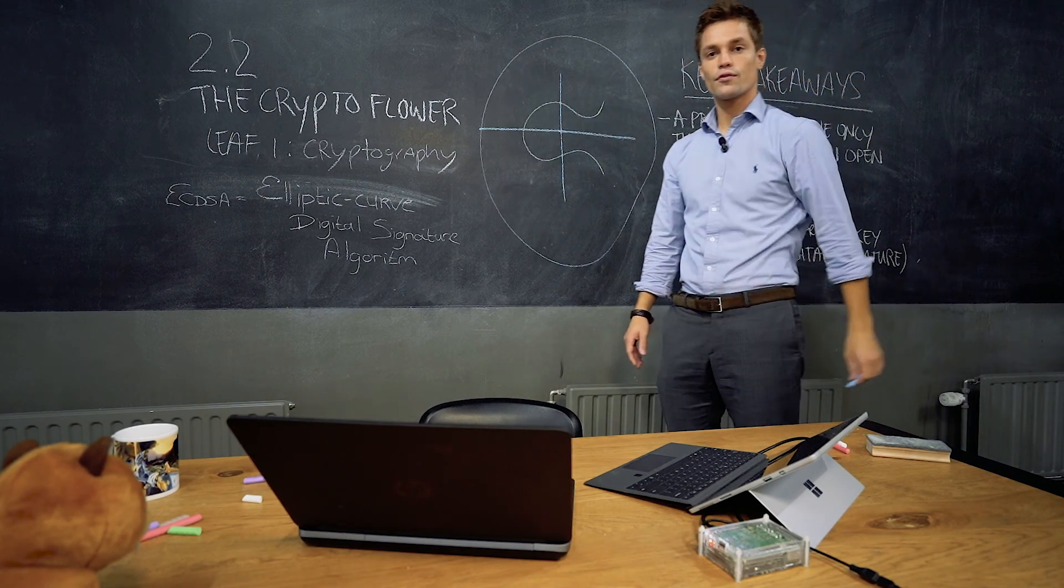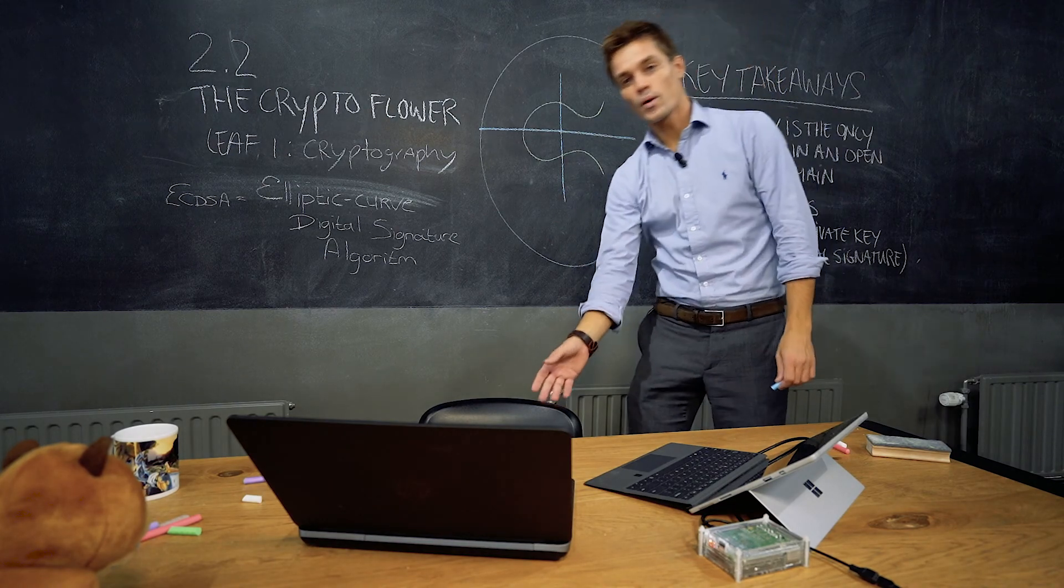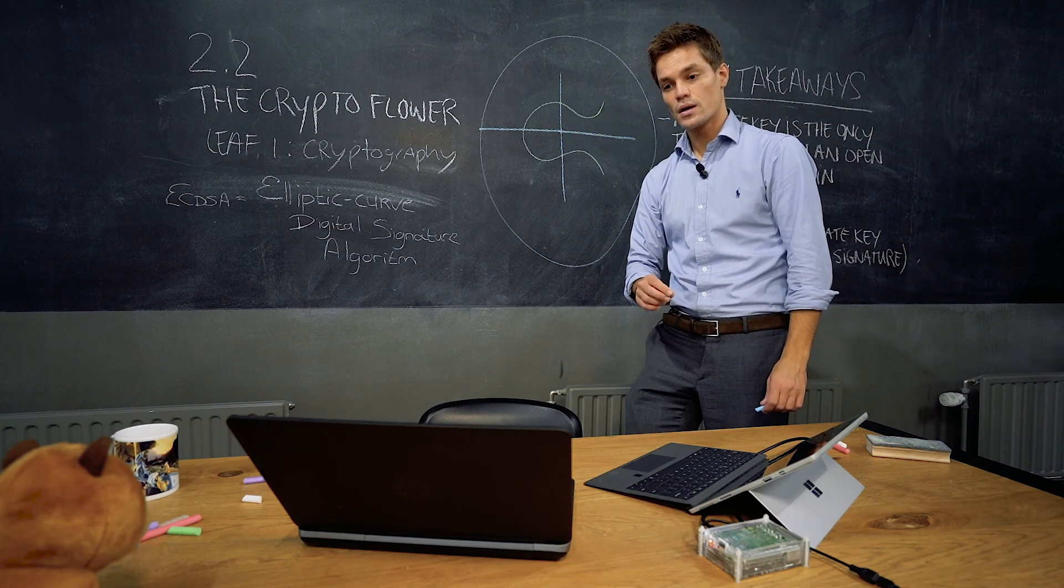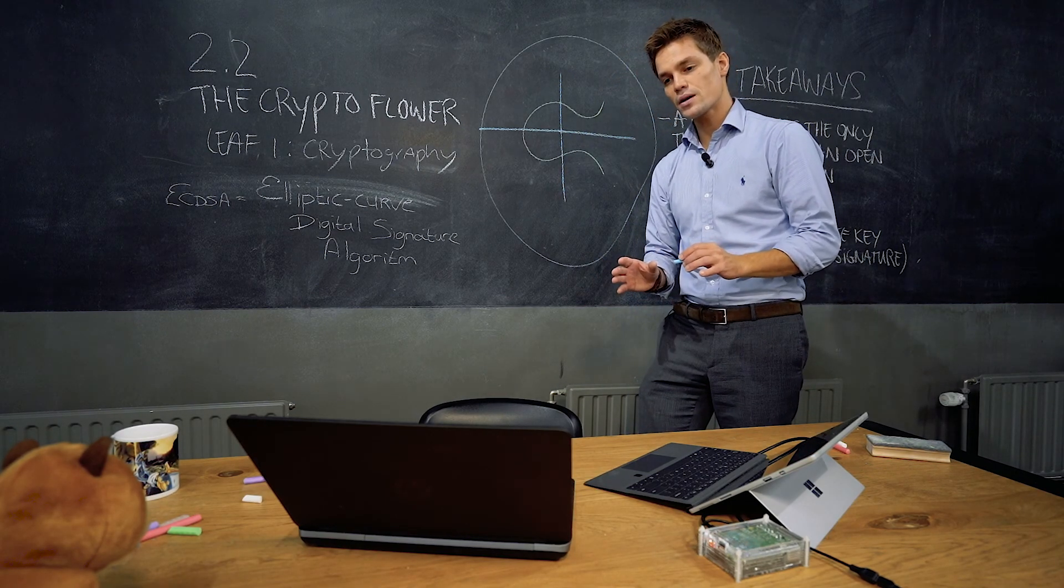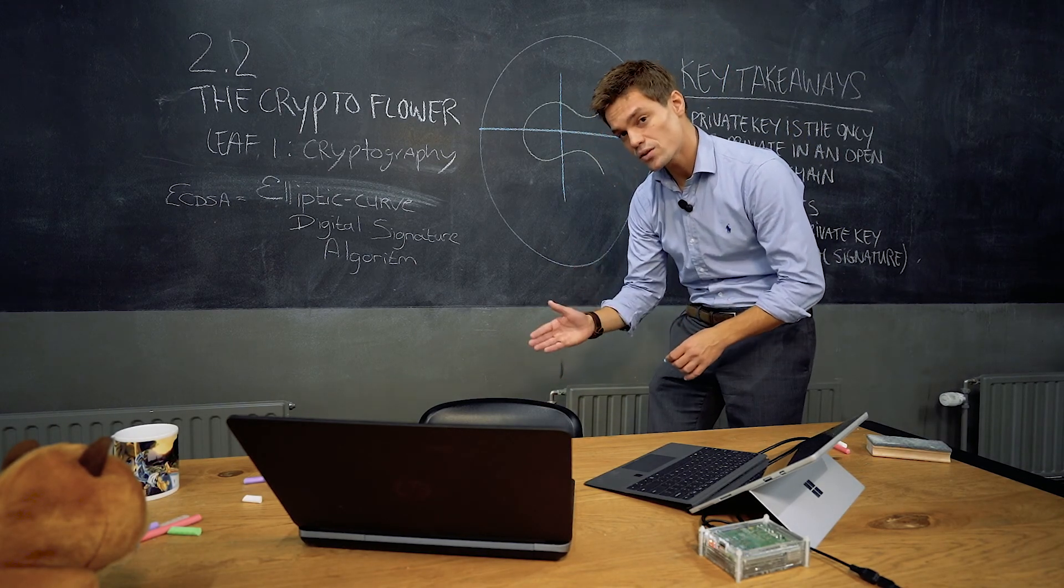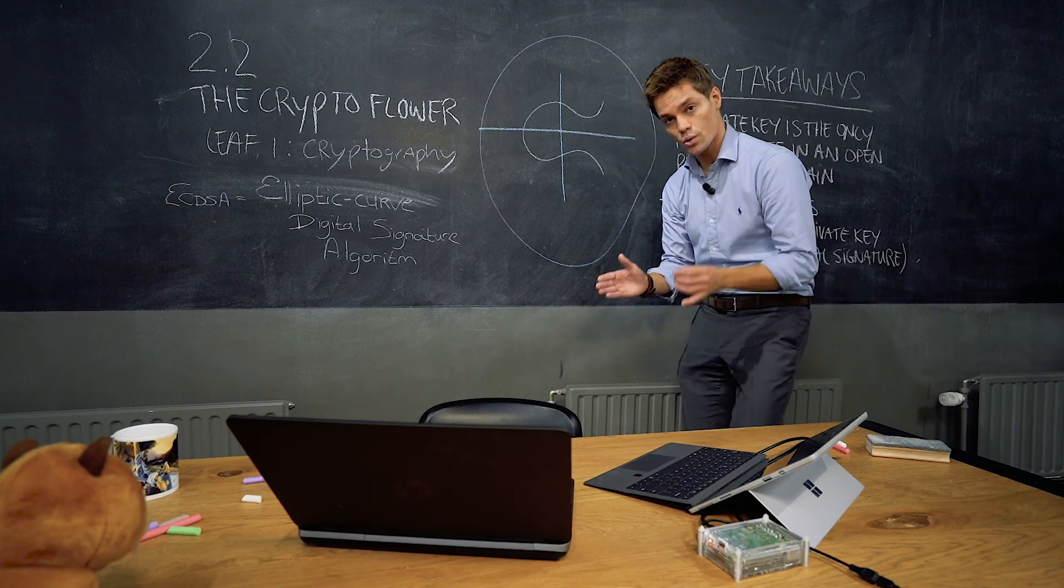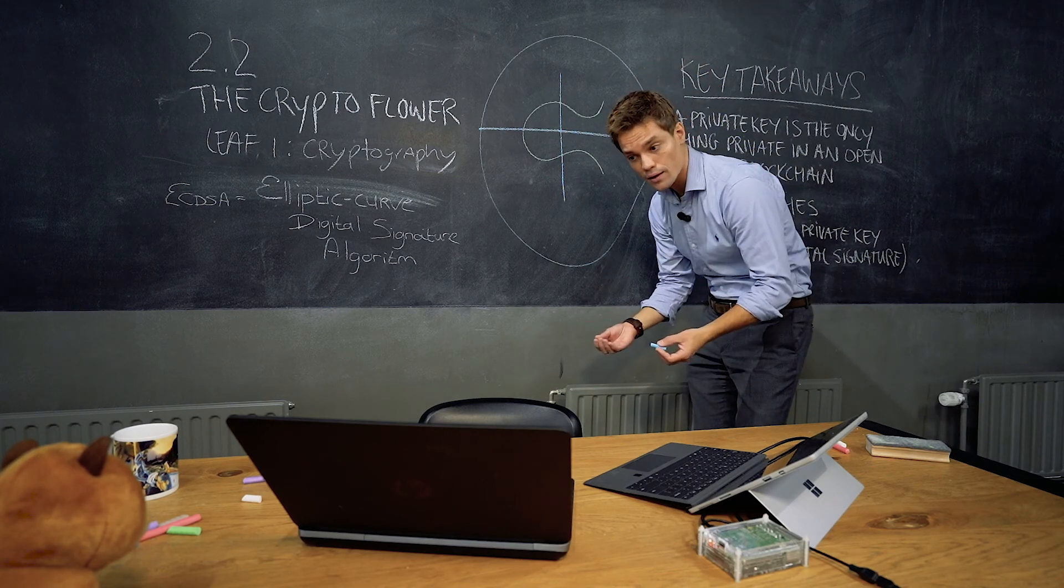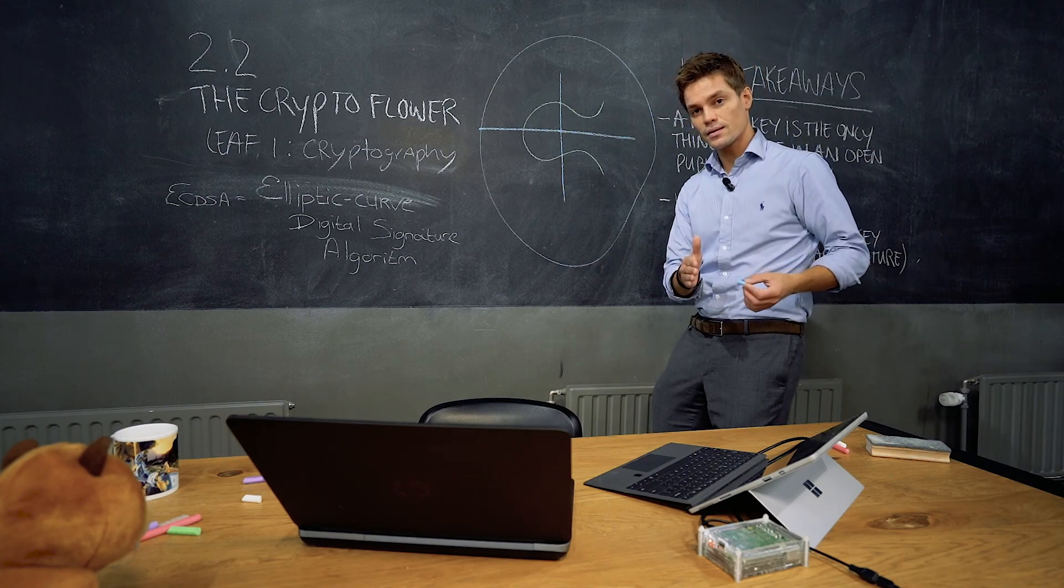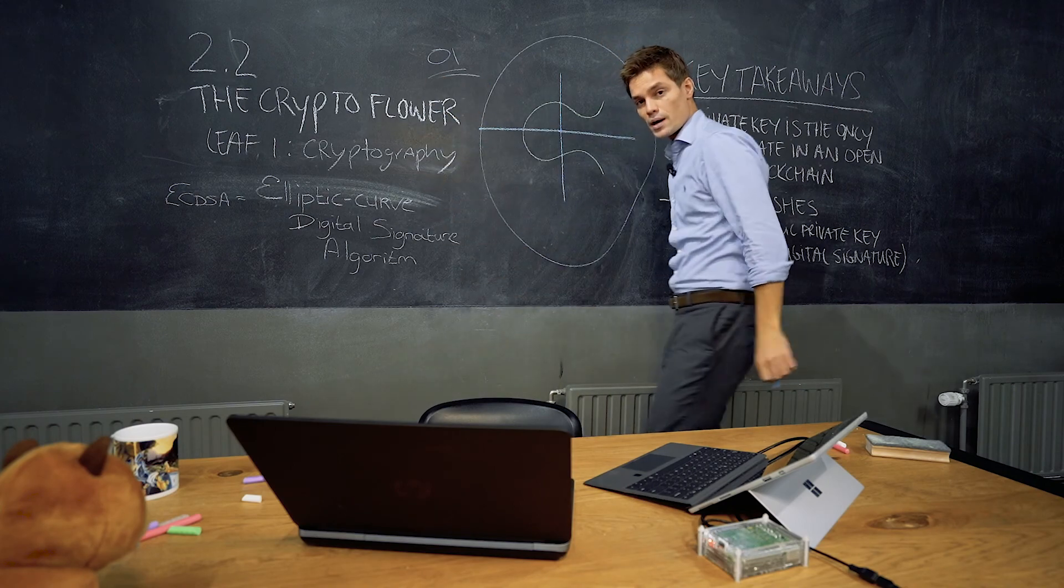This is the elliptic curve digital signature algorithm. More importantly, we use it to create private public key pairs. So private public key pairs are nothing more than numbers. A blockchain is a digital ledger, so everything are numbers. Otherwise your hardware can't run on it. This is nothing more than numbers, but of course represented by us in hash. We're still talking about zeros and ones there, bits and bytes.